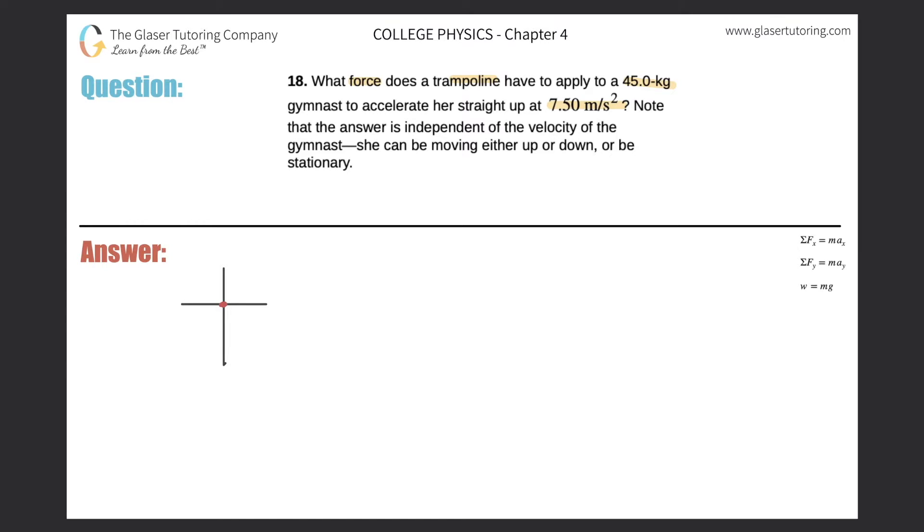Well, gravity is pulling right on the gymnast, okay? And the trampoline is going to be pushing her up. So if you think about it, the trampoline has to not only overcome the force of gravity pulling her down, but it also has to accelerate her at 7.5 meters per second squared.